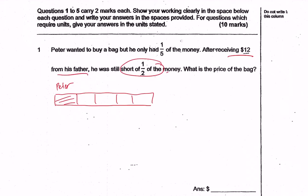So if I were to redraw this, this means that if I add $12 to what Peter currently has, this will be half the price — half the amount of what Peter is required.